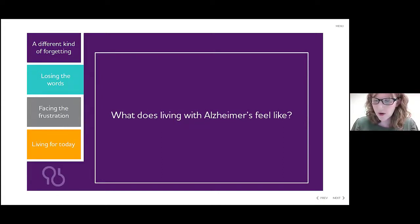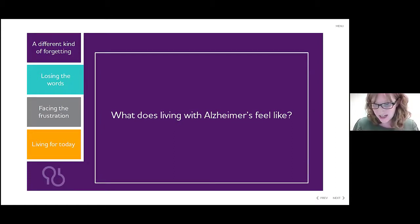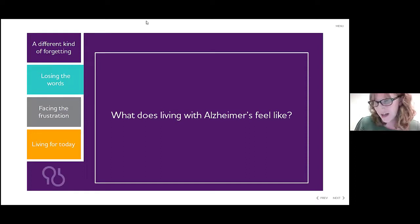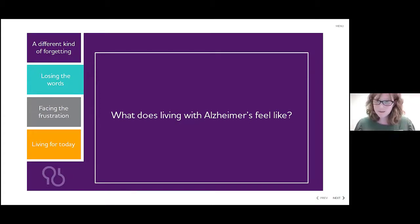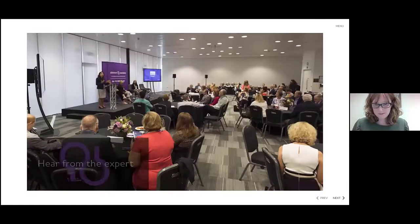Those last two people we heard from are living in the early stage of the disease process. Symptoms will worsen over time for everyone; however, people progress through stages of Alzheimer's at different rates. On average, a person with Alzheimer's lives four to eight years after diagnosis, but can live as long as 20 years depending on other factors. Alzheimer's affects everyone differently, making it difficult to place a person in a specific stage. However, there are three general stages: early, middle, and late stage Alzheimer's — referred to medically as mild, moderate, and severe.